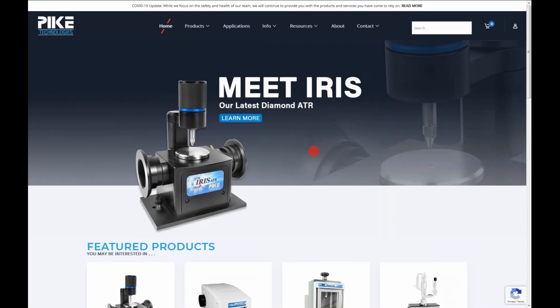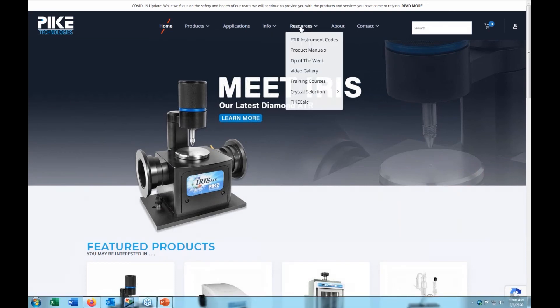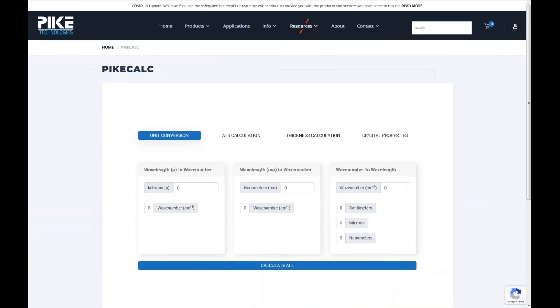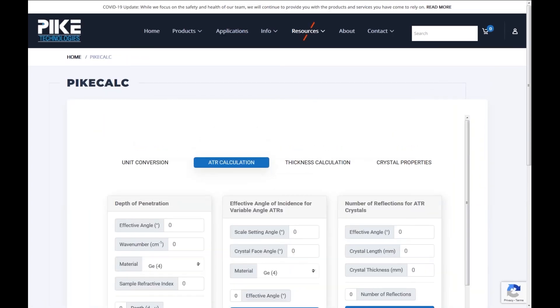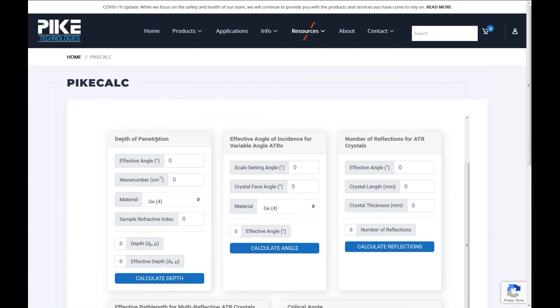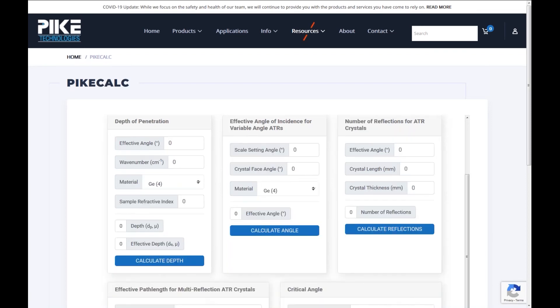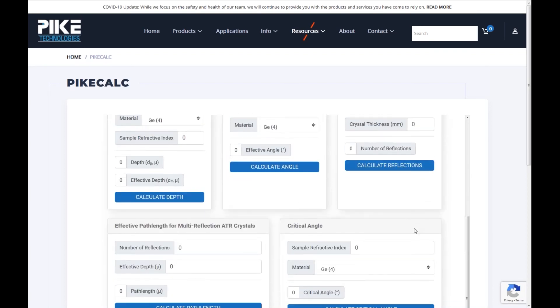Okay. So you can follow along on our website. If you are at our homepage, go to resources and then select Pike Calc. And we have several different tabs here. We're going to go to ATR calculations. I'm going to make this a little bit bigger so you can see a little better. Okay. Again, here's a list of everything we talked about at the beginning. And we're going to make pit stops at each one of these boxes. But first we're going to stop at the critical angle.